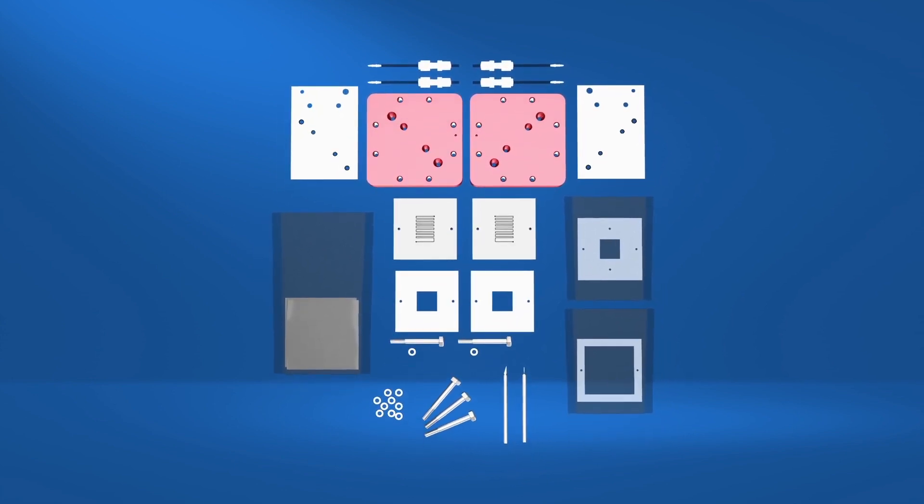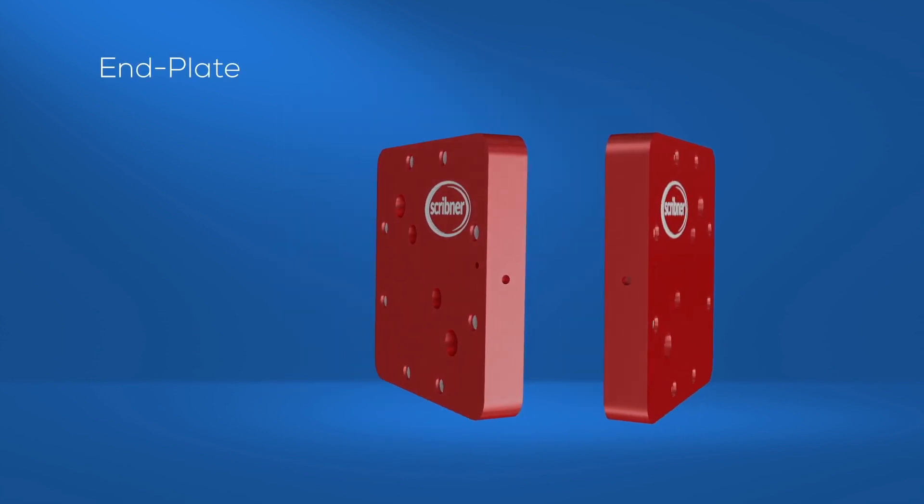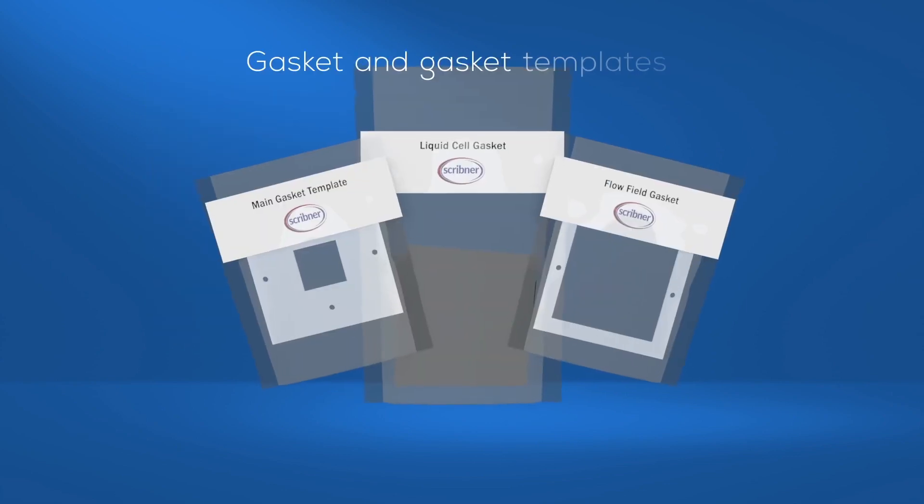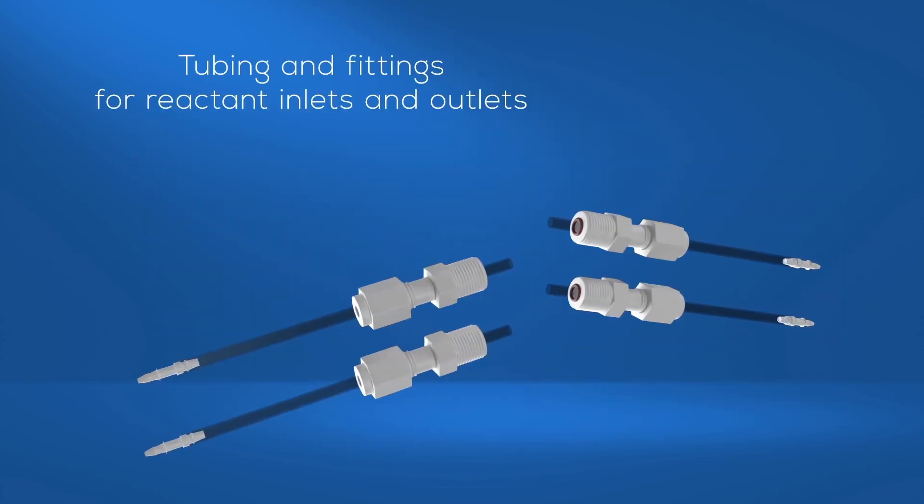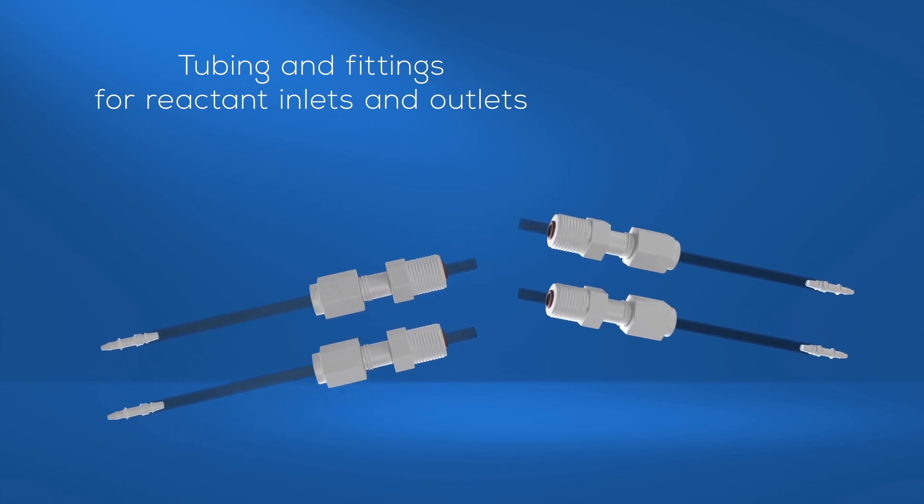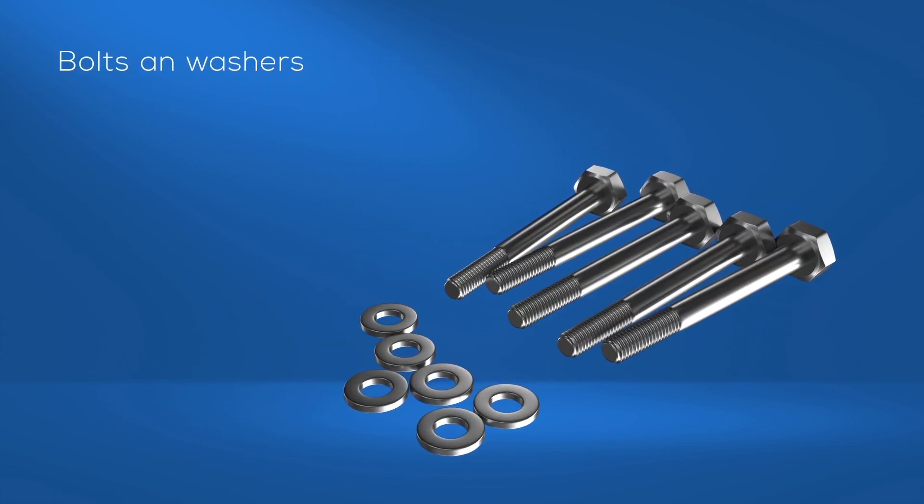Primary components of the fixture are end plates, current collectors, gasket and gasket templates, flow frames, tubing and fittings for reactant inlets and outlets, O-rings, bolts and washers, and cell heaters.